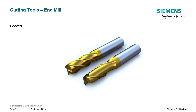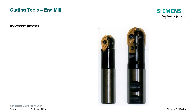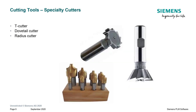Coated end mills have a very hard coating applied to them — usually some form of super hard material applied to a fairly durable cutter so that the edges stay sharper longer. An indexable end mill, instead of having flutes ground onto it, has replaceable inserts that can be replaced by the machine operator as they get dull, allowing you to reuse the tool much longer than a typical ground end mill. Specialty cutters like T-cutters, dovetail cutters, and radius cutters allow you to form certain geometry relatively easily.